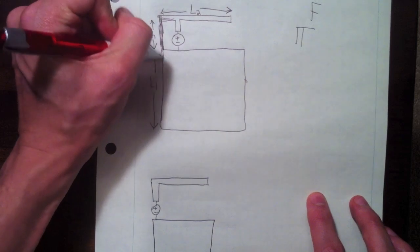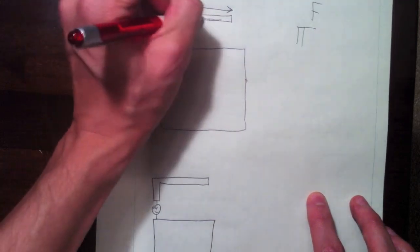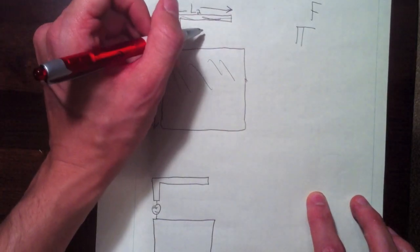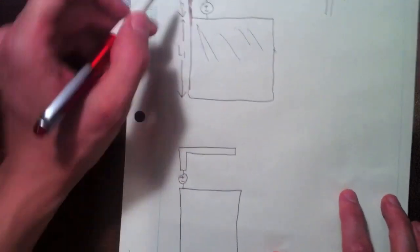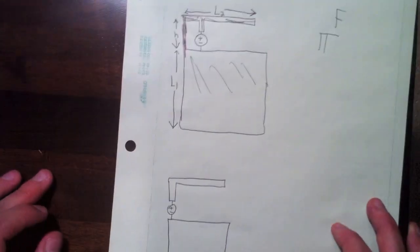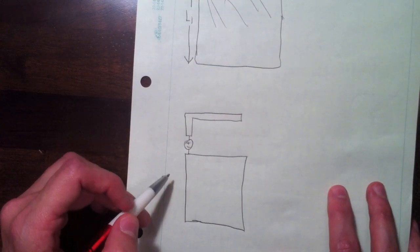This is all metal here and then just air or some non-conducting dielectric here. Without this shorting arm on the side, we have this structure.